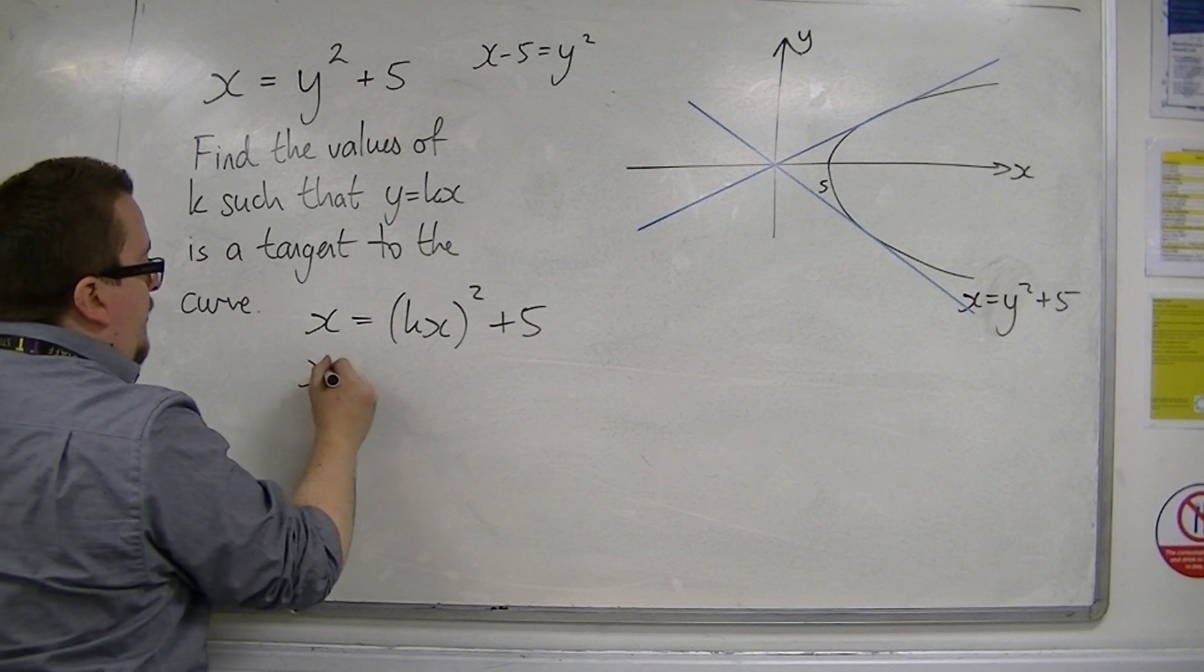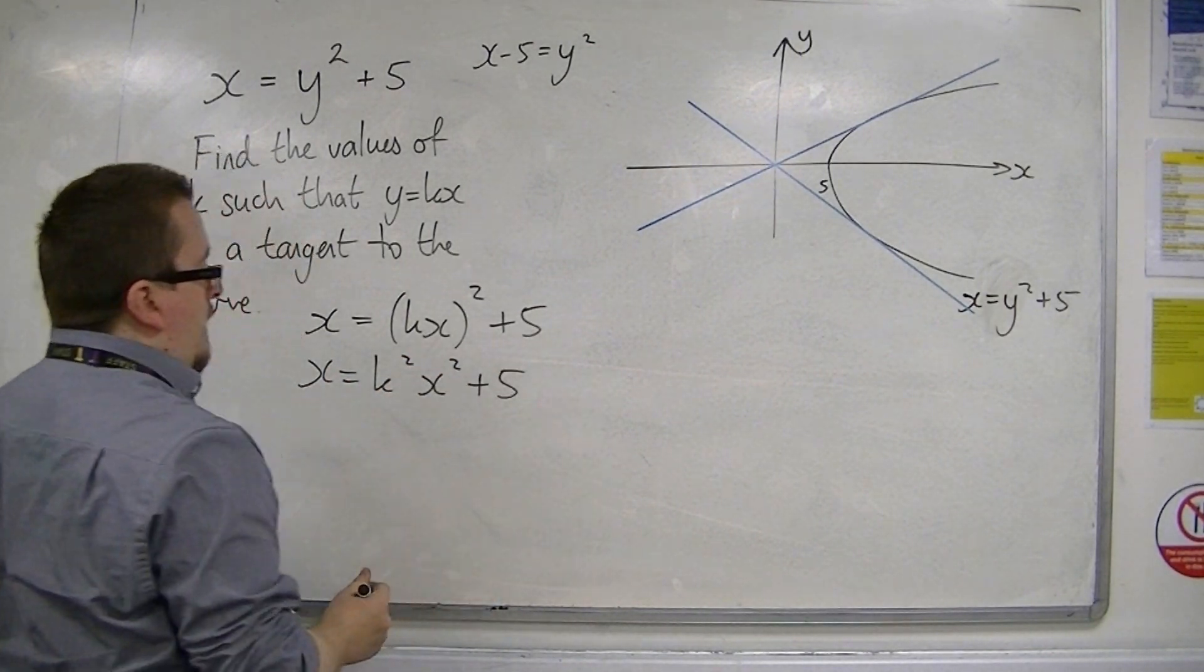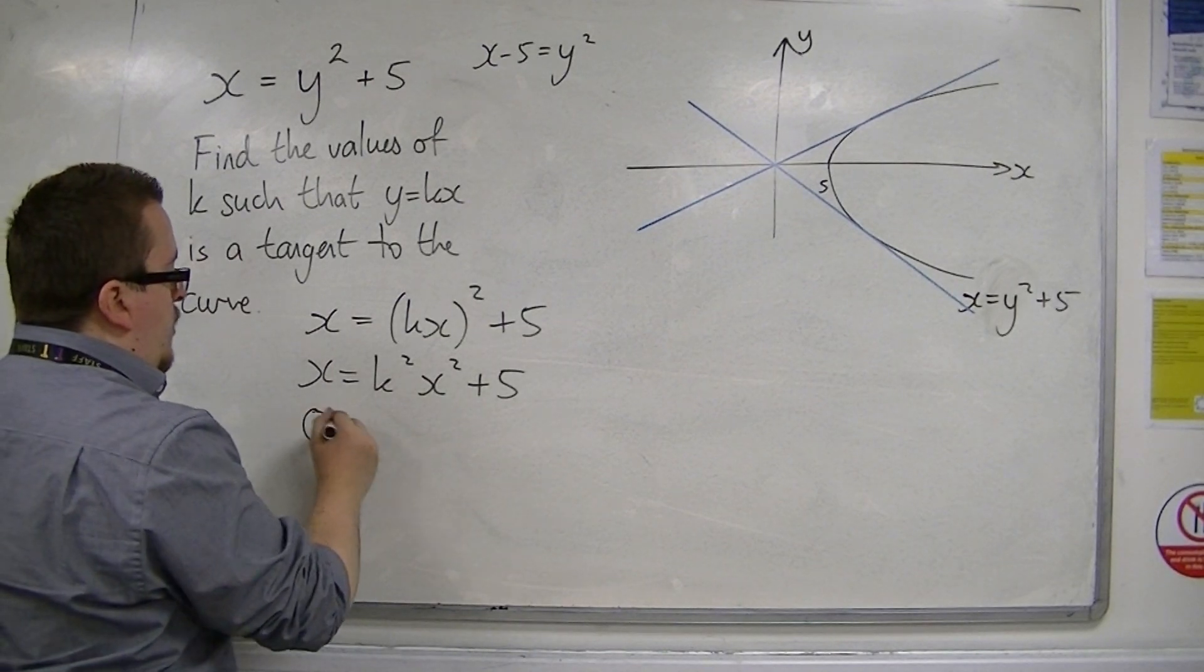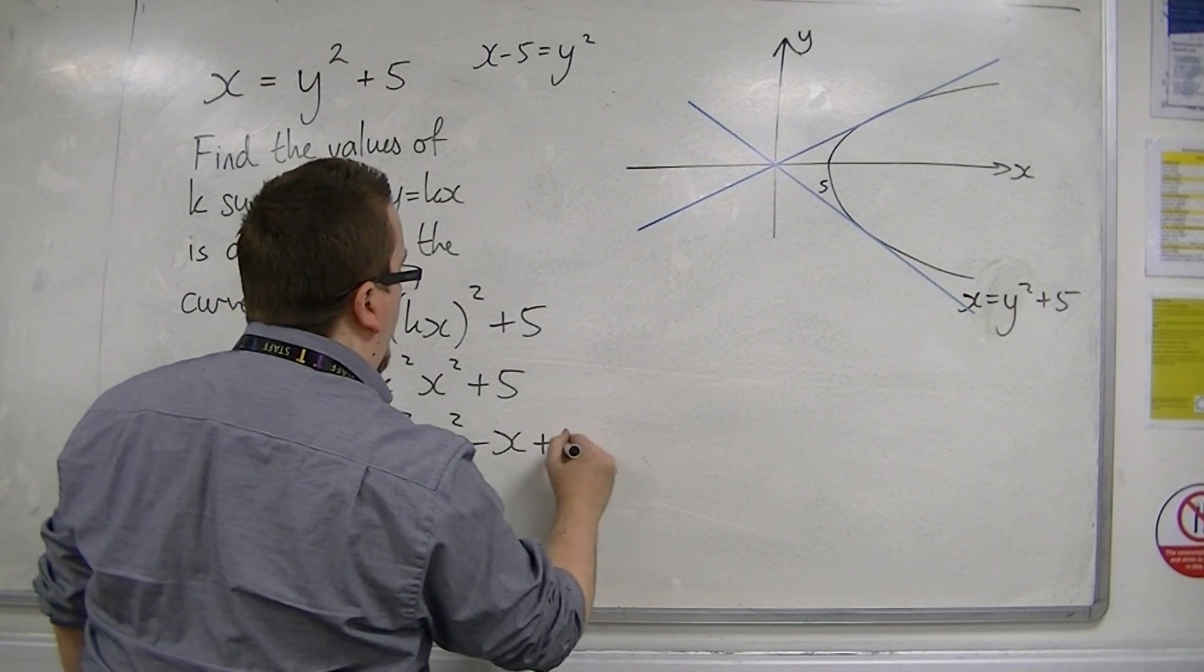I'm going to want to expand this. So x is equal to k squared x squared plus 5. Put it all onto one side of the equation. So 0 is equal to k squared x squared minus x plus 5.